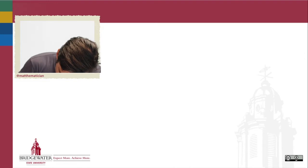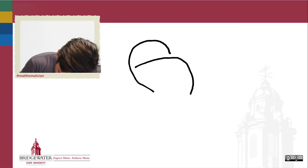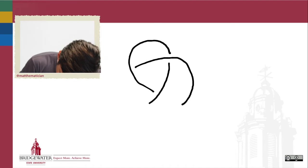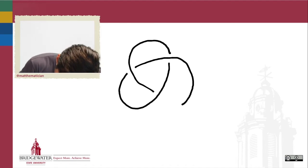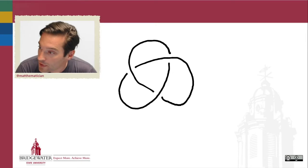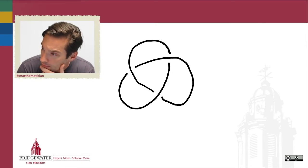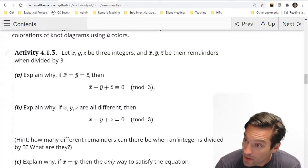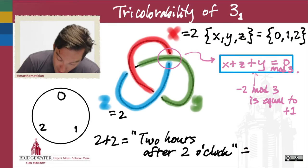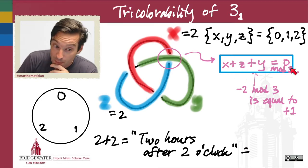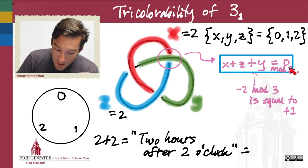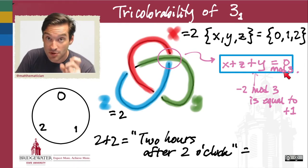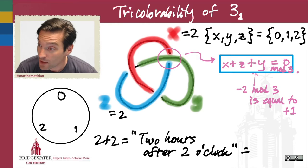Suppose I have a diagram of a trefoil knot — our favorite non-trivial knot diagram. Your job is to validate the claim that the mod 3 equation x plus y plus z equals 0, mod 3, is a valid way to mimic the colorability restrictions for a valid three-coloration of a knot.